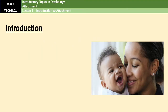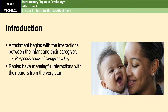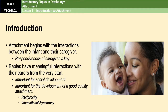Attachments begin with the interactions between babies and their caregivers. Researchers suggested that the responsiveness of the caregiver to the baby's signals has a profound effect on the quality of the attachment between the two. Babies have meaningful interactions with carers from the very start of their lives, and psychologists believe these interactions have important functions for the child's social development. Good quality, early social interactions are associated with successful development of attachment.